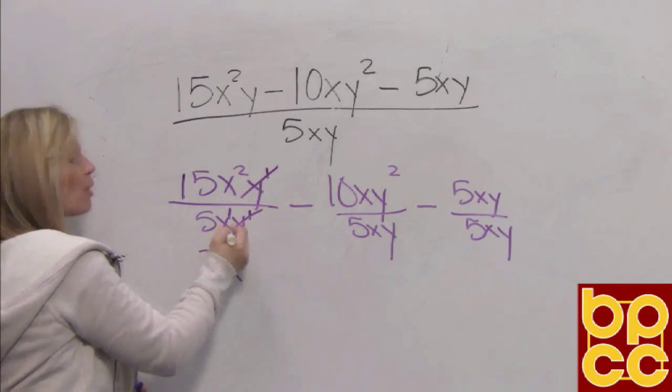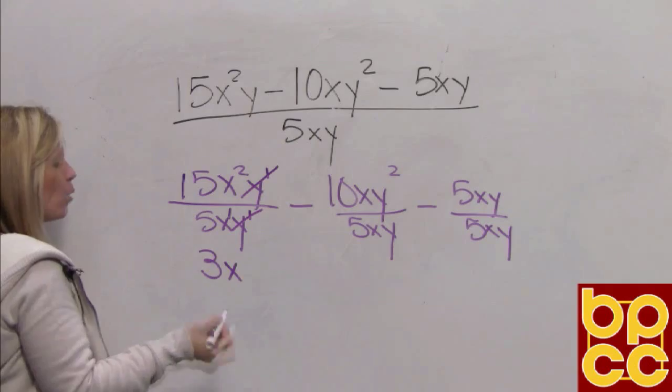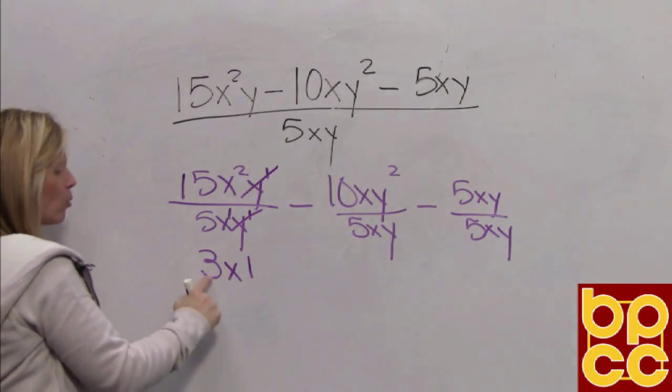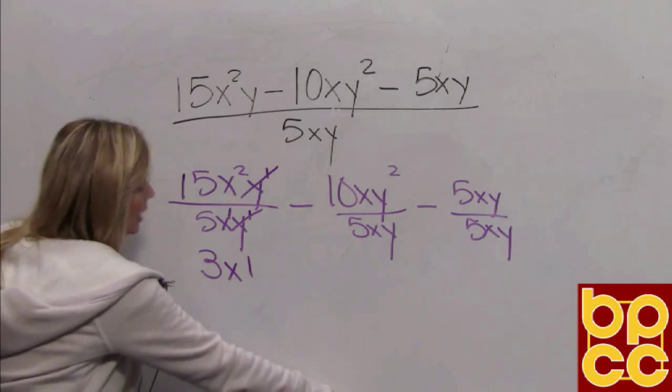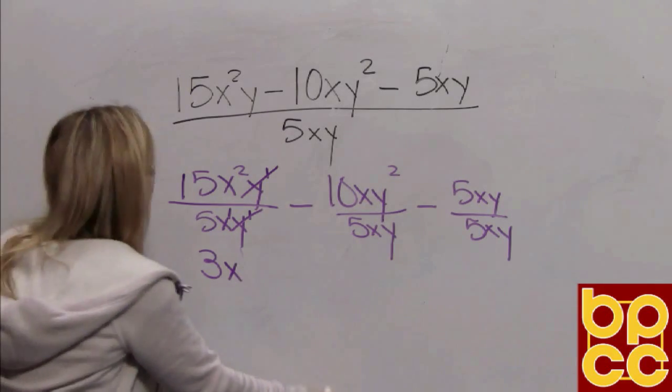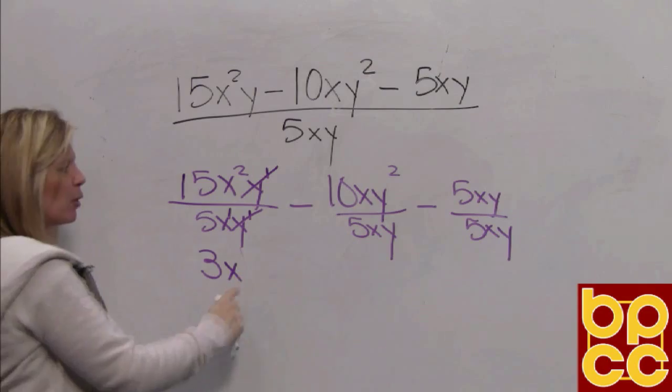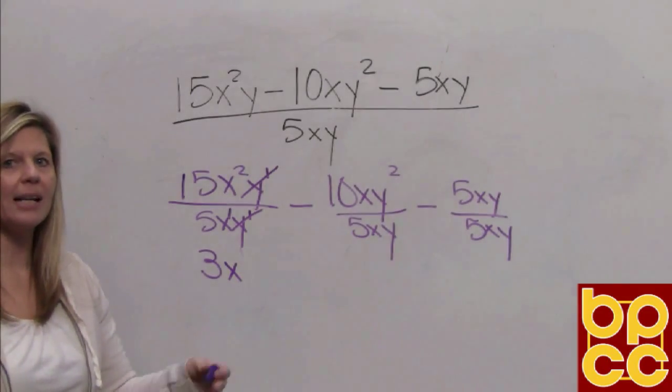So what we do is we cross these out. They make a one. We don't need to write the one because we wouldn't write 3x one. Because 3x times one is just 3x. So because that one is connected by multiplication, we do not need to write it.